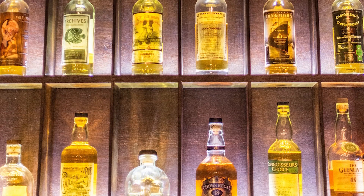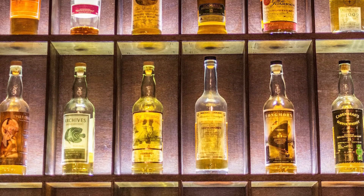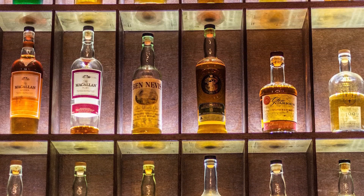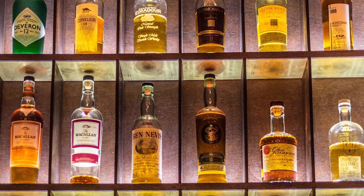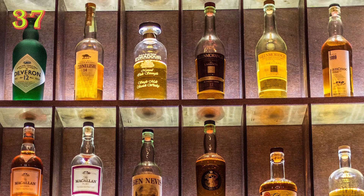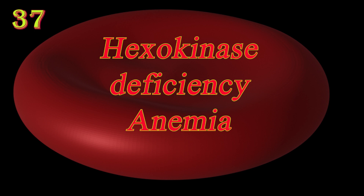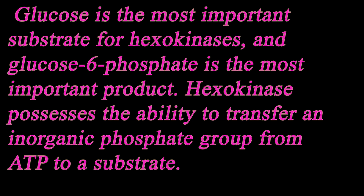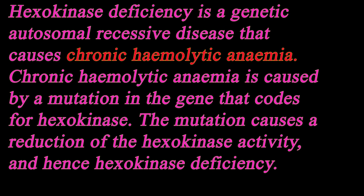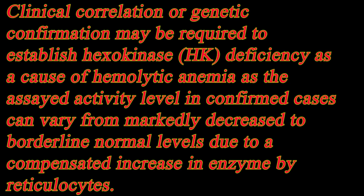Acquired stomatocytosis with hemolytic anemia occurs primarily with recent excess alcohol ingestion. Hexokinase deficiency anemia is a genetic disorder linked to a mutation of the hexokinase enzyme, causing hemolytic anemia. Hexokinase deficiency leads to hemolytic anemia due to decreased ATP production.